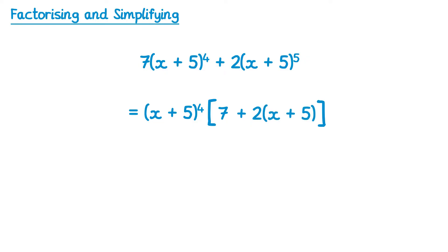Now what we do is simplify the expression inside this large bracket. If you expand the brackets here, we end up with 7 + 2x + 10, and if you collect like terms, the 7 and the 10 add together. You end up with (x + 5)⁴ then inside a regular bracket now, 2x + 17.